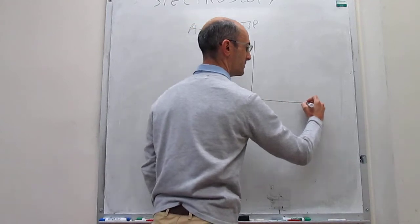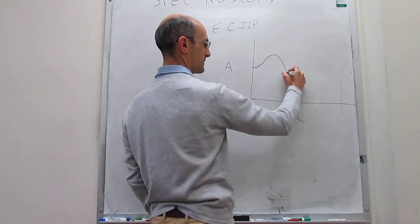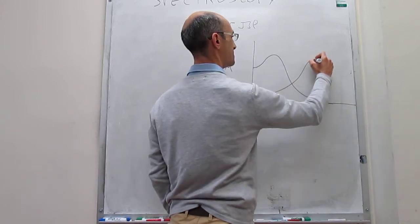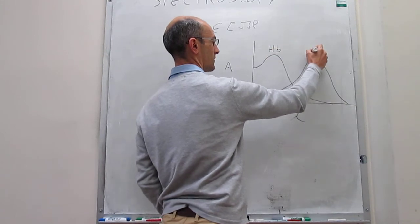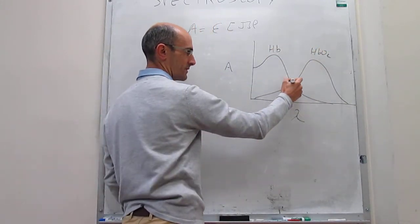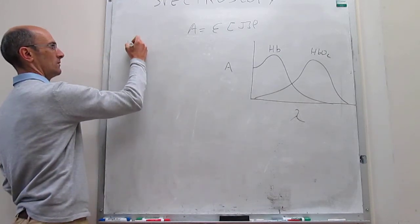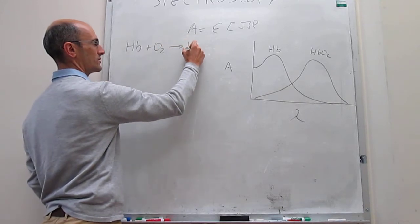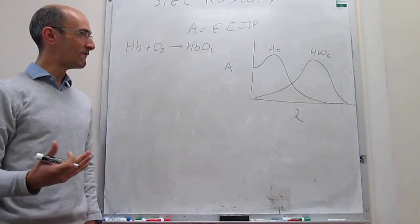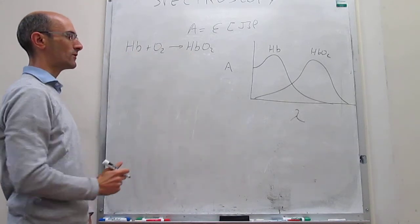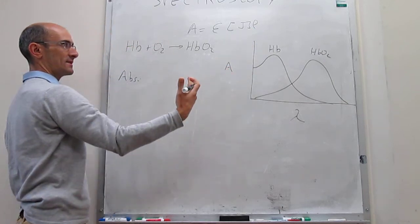We're going to draw this a little larger, plotting lambda on the x-axis. Here's the absorbance for hemoglobin, which looks something like this, and oxyhemoglobin, which may look something like this. This is an exaggerated picture of how the spectra of hemoglobin and oxyhemoglobin look, but it makes the point. Notice that there is a point that seems quite interesting. Suppose that you're interested in the binding of oxygen to hemoglobin to form oxyhemoglobin — in a particular experiment you might have a mixture of hemoglobin and oxyhemoglobin.